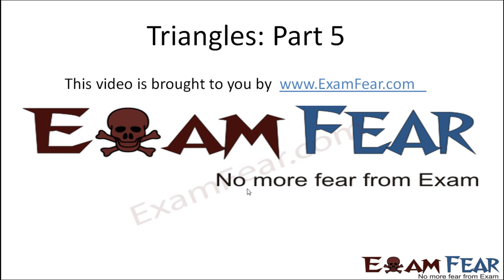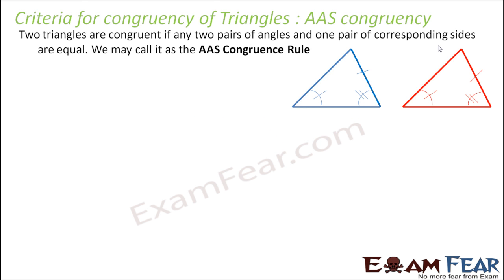Hello friends, this video on Triangles Part 5 is brought to you by ExamFear.com. The AAS rule says that two angles and one side — in the order angle, angle, side — these are corresponding, meaning the two triangles are the same. When two angles are the same, the third angle will also be the same.